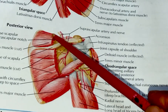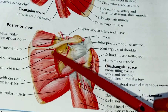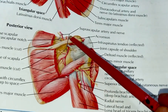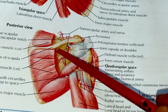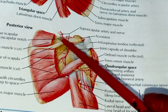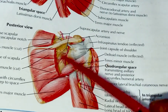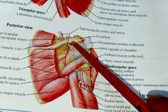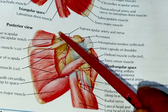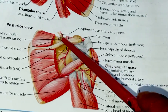Just above the spine we have got the supraspinous fossa and just below the spine we have got the infraspinous fossa. In the supraspinous fossa we have got a muscle called supraspinatus muscle, and in the infraspinous fossa we have got a muscle called infraspinatus muscle. Both muscles have been cut and a portion removed so you can look at the nerve supplying them.